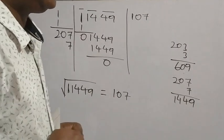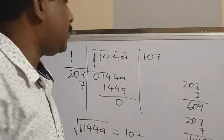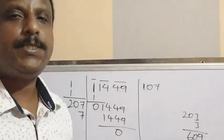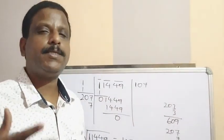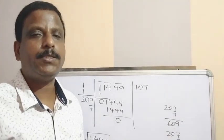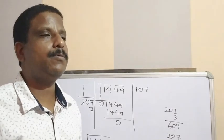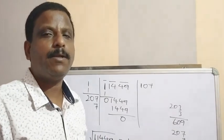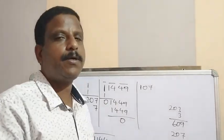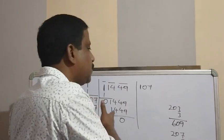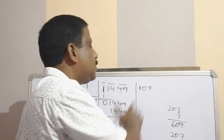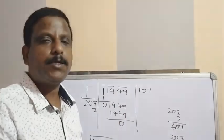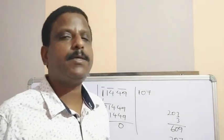Understood? I have taken 3-digit, 4-digit, and 5-digit numbers. The procedure is the same for 6 digits or 10 digits — follow the same procedure. If the number is perfectly divisible, the remainder is 0. If it is not divisible, the remainder is left at the end. This is the long division method for square root. Hope you can understand it. If you still have doubts, you can ask me on my personal WhatsApp number. Thank you.